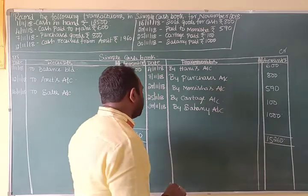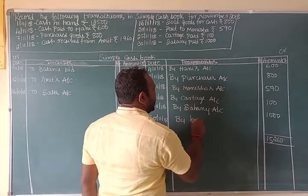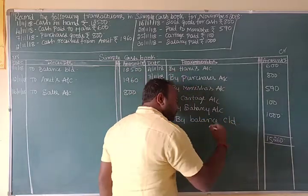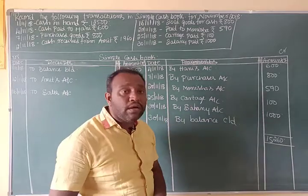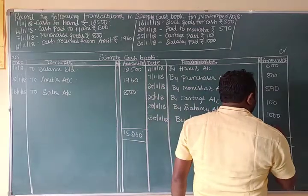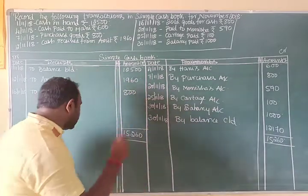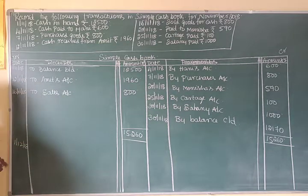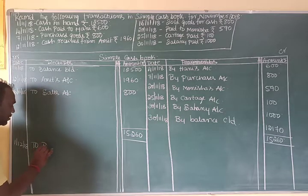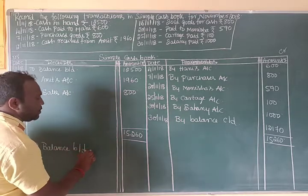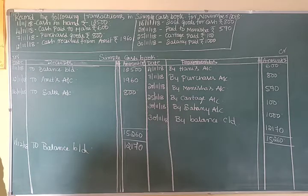The balance of 12,170 is carried forward to the credit side. Then for the next month, 1st December 2018, on the debit side we record: To Balance Brought Down — Rs. 12,170. This represents the cash in hand carried forward to the next period.